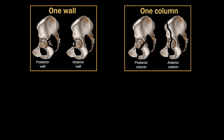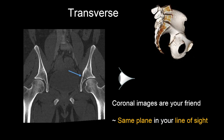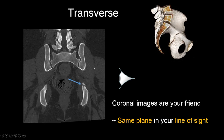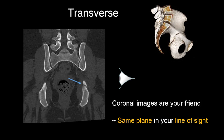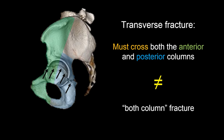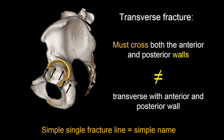We have a good idea of one-wall and one-column fractures. The last simple fracture type is the transverse fracture. For transverse fractures, the coronal images are your friend. Place your mouse in one spot and scroll from front to back through that fracture. If you don't have to move your mouse much because the fracture follows a straight line from front to back, you're dealing with a transverse acetabular fracture. A transverse fracture by definition crosses both anterior and posterior columns, but we do not call it a both-column fracture — that name is reserved for a specific fracture type. We call it simply a transverse acetabular fracture.